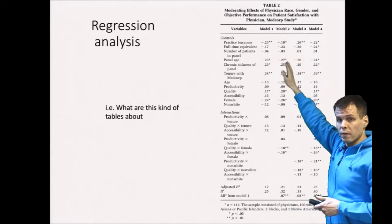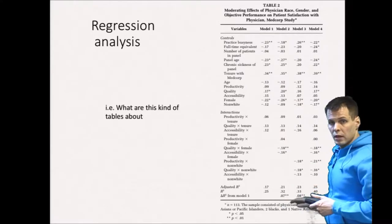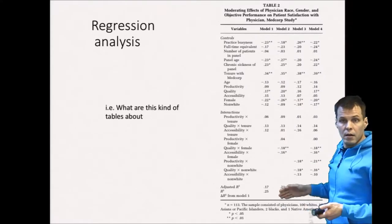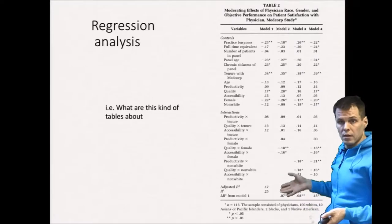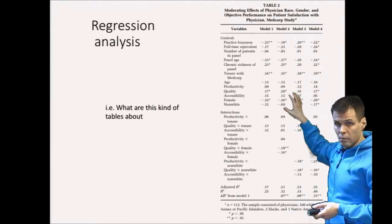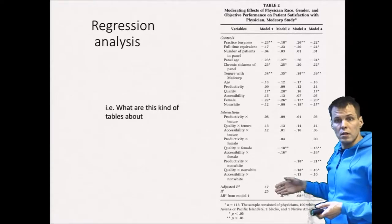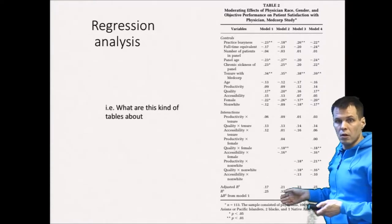The regression analysis results are typically presented as a table like this. So here we have four different regression models, we have different regression coefficients, we have different model indices and there are certain assumptions behind this table that you need to understand and also you need to understand what the numbers tell us. We will be looking at this kind of tables in the next couple of videos but I will first explain what the regression analysis is actually about.